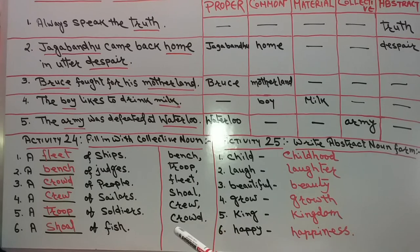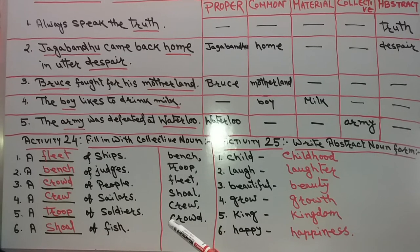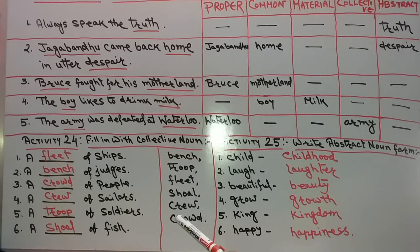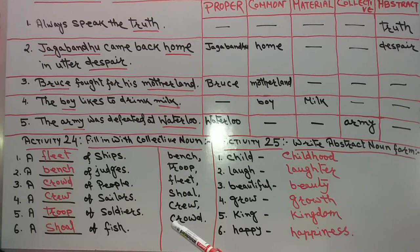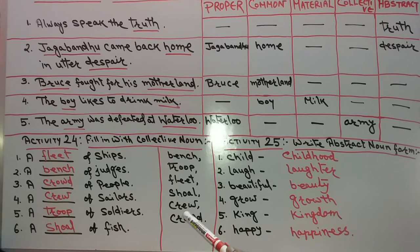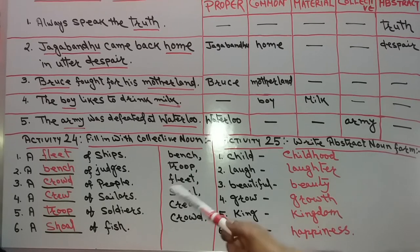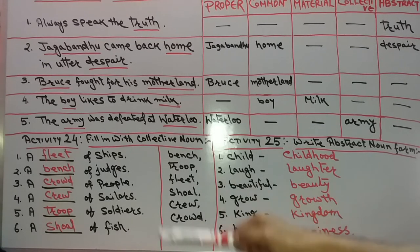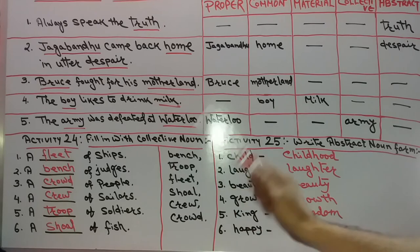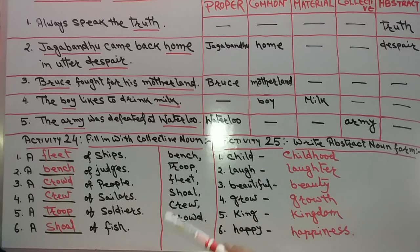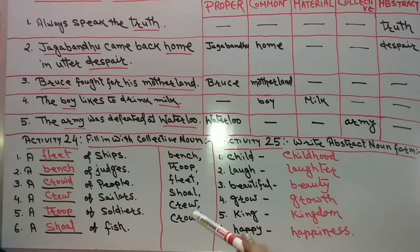Number 5: A troop of soldiers. For a group of soldiers, we can also say army or regiment. So we have three words for a group of soldiers: army, troop, and regiment. Since troop is available in the help box, we are putting troop.